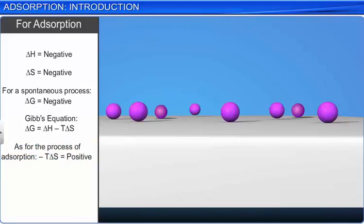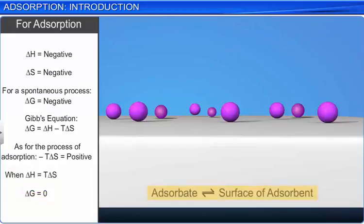When delta H becomes equal to T delta S, or when delta G becomes zero, the adsorbate and the surface reach a state of dynamic equilibrium.